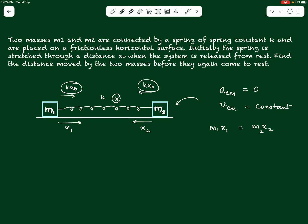Where does this equation m1*x1 = m2*x2 come from? It comes from the fact that the shift in the position of the center of mass must be zero — the center of mass will not shift as the blocks move towards each other. The condition for this, as seen in previous videos, is that the vector sum of mass times displacement must be zero, and magnitude-wise we relate them through this equation. So we have one equation connecting x1 and x2.